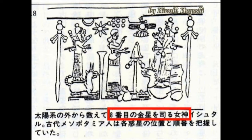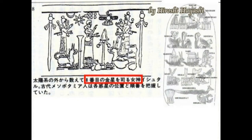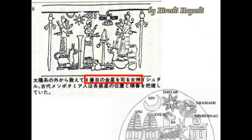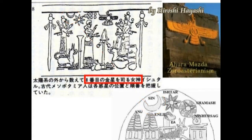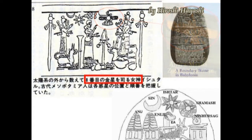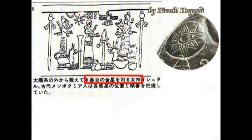ゼカリアシッチンの本の中に、こんな冊絵が載っていました。この冊絵の左上の方に、八方向に伸びる金星が描かれています。八方向に伸びる金星がイスターのシンボルマークです。八という数字と金星がここで結びつくわけです。バウンダリーストーンを見てみますと、頂点にイスターが立ちます。女神中の女神です。メソポタミア、バビロニアでは頂点に立ちます。そのイスターのシンボルマークは、八方向に伸びる星、八番目、金星ということになります。神を頂点に立てて、イスターの紋章が描かれています。八方向に伸びる金星です。八という数字と金星がこうしてつながっていくわけですね。